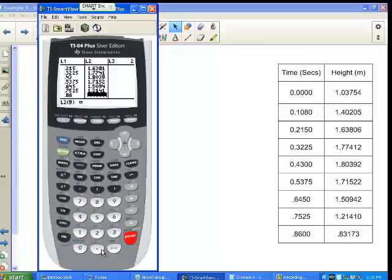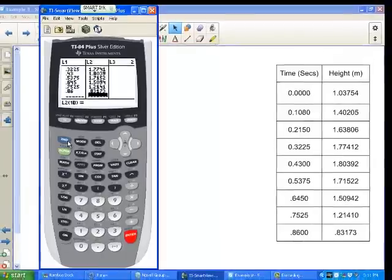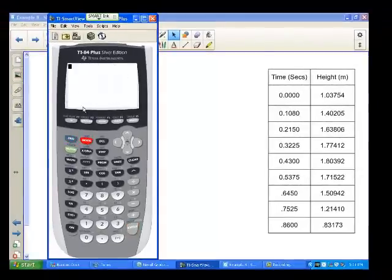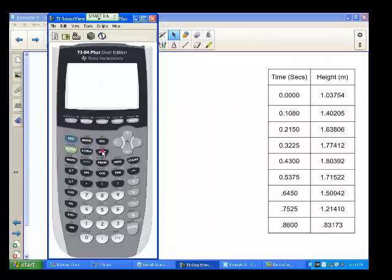When you're finished, we've got two sets of data and everything matches up. To run the regression analysis, go back to your home screen by hitting Second and Quit. When you're in your home screen, hit the STAT key again and arrow over to Calculate.